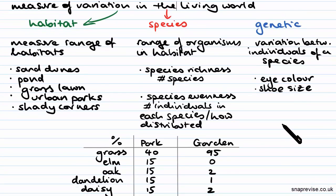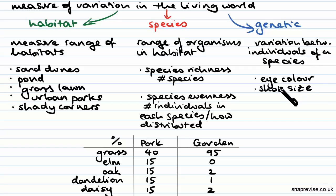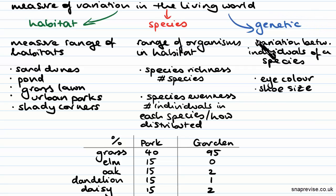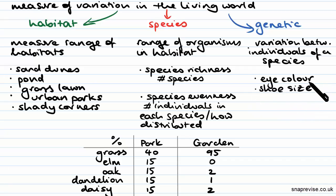Finally, if we are looking at a species, we can actually measure the genetic diversity within that species. That tells you about the variation between individuals of a species — something like measuring eye colour, or the distribution of shoe sizes in your class. That's all genetic variation, and it comes in two forms: continuous variation, like height, which is on a numerical scale, and discontinuous variation, like eye colour, which falls into categories.